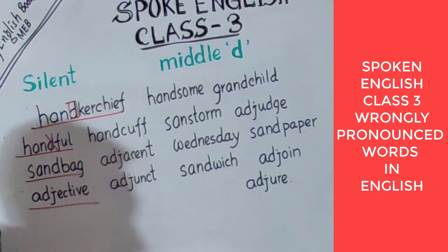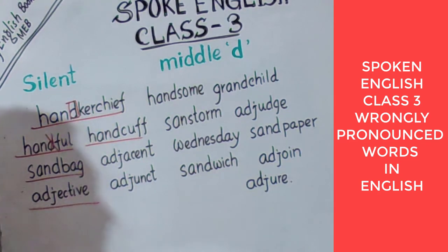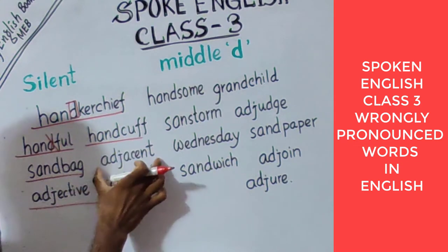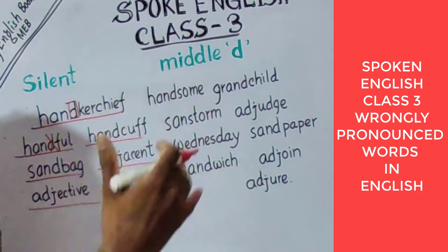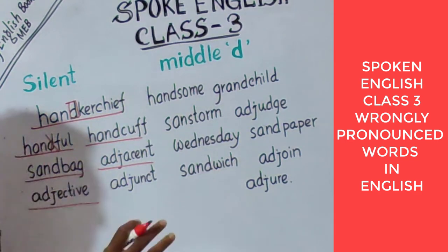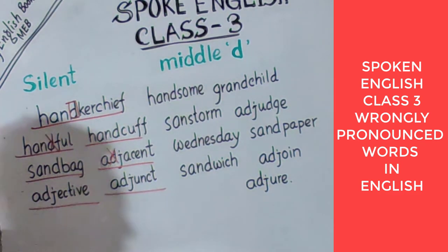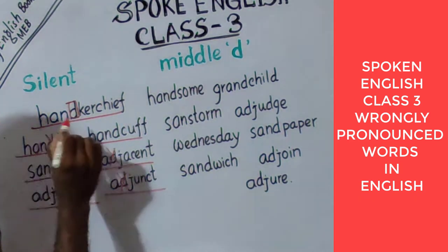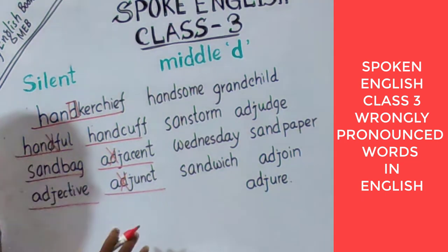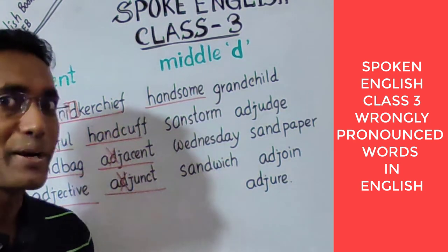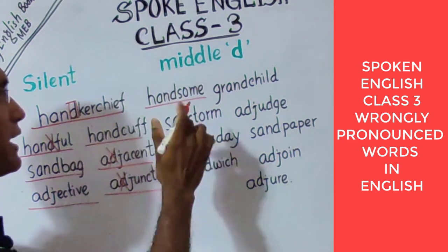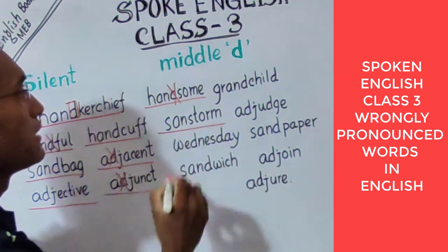Next, 'handcuff' — police use handcuffs for keeping criminals — D is silent, so it's 'handcuff.' 'Adjacent' — it's not 'ad-jacent,' it's 'adjacent' — D always remains silent. 'Adjunct' — D is silent, so it's 'adjunct.' So: handkerchief, handful, sandbag, adjective, handcuff, adjacent, adjunct. Next, 'handsome' — it's not 'hand-some,' it's 'handsome.' He's a handsome boy.